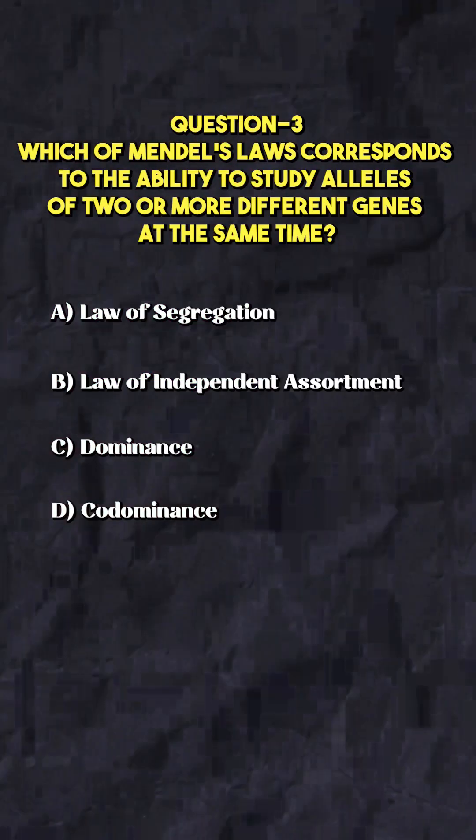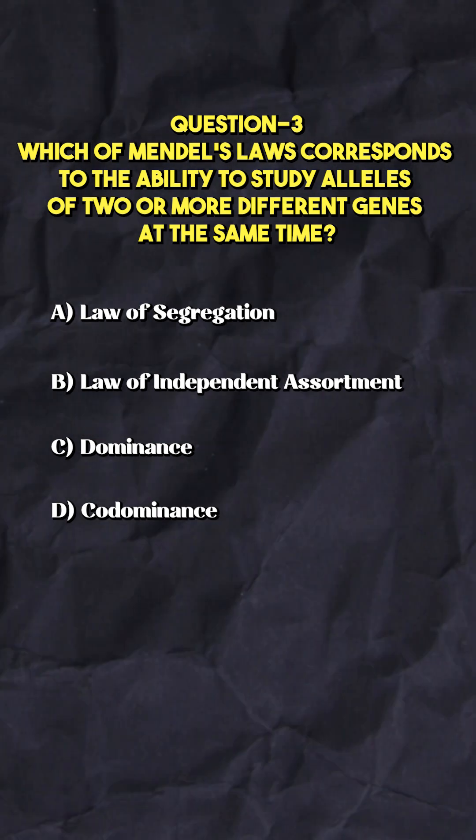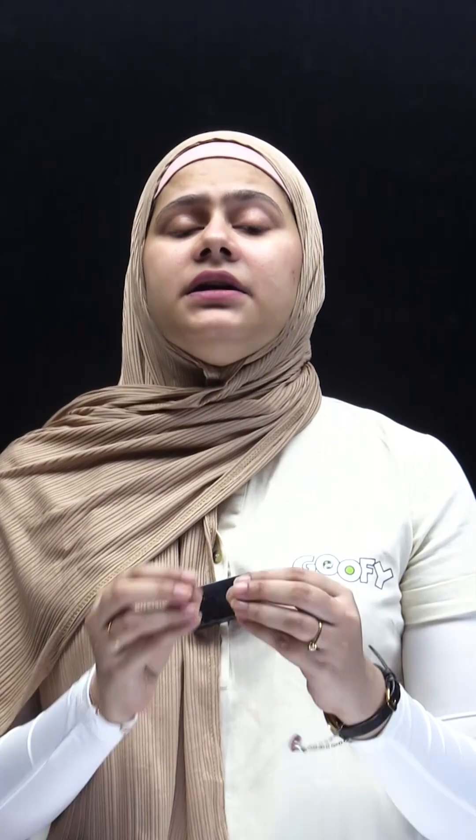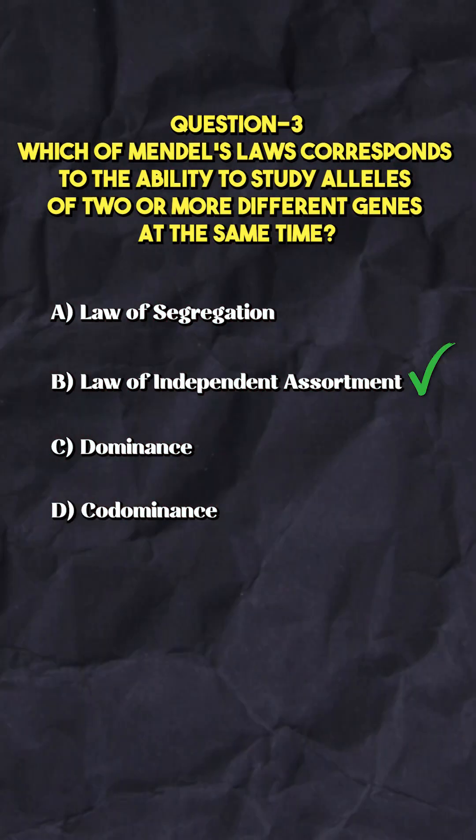Which of Mendel's Laws corresponds to the ability to study alleles of two or more different genes at the same time? According to the Law of Independent Assortment, when we study two or more characters, the alleles of the genes separate independently of one another. These traits do not blend among themselves; there is random segregation, and finally when gametes form, there is independent assortment of each character irrespective of other characters. So the answer for this question should be the Law of Independent Assortment.